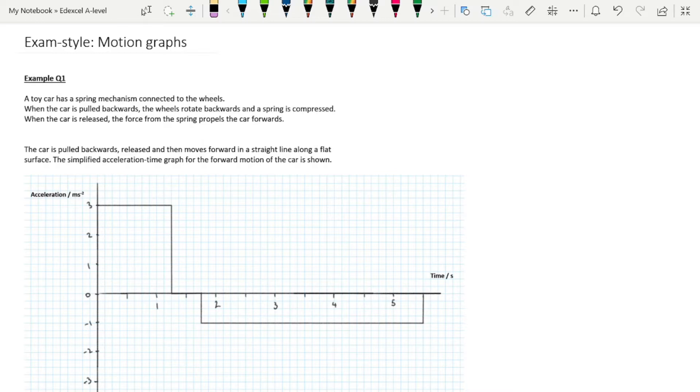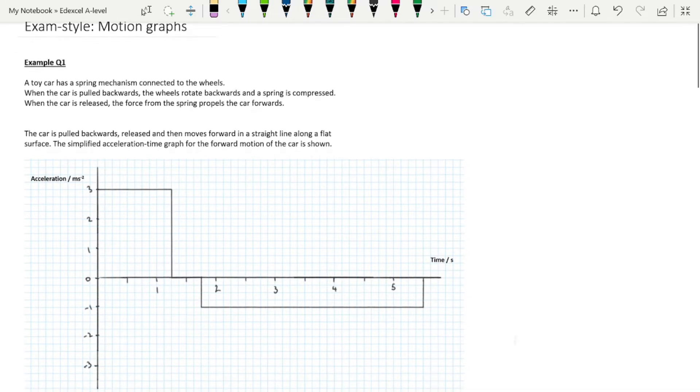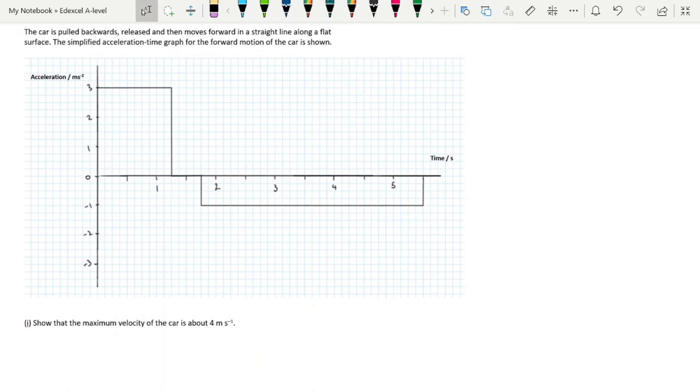Question one: A toy car has a spring mechanism connected to the wheels. It's pulled backwards, the wheels rotate, compress the spring. When the car is released, the force propels the car forwards. The car is pulled backwards in a straight line along a flat surface. The simplified acceleration-time graph for the forward motion is shown.